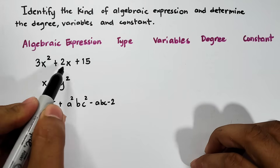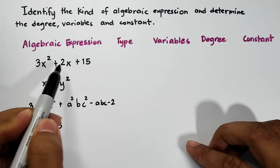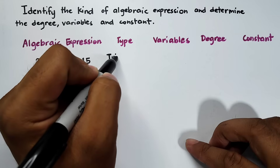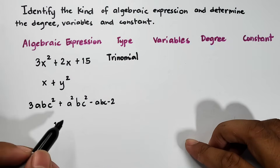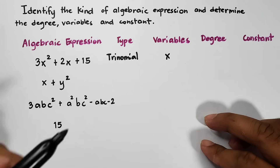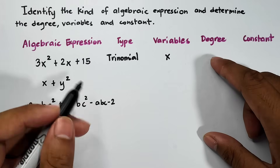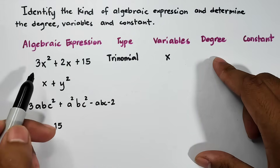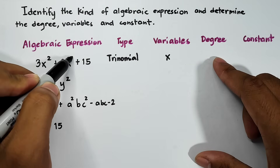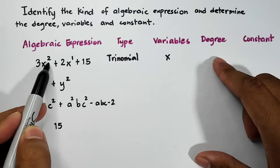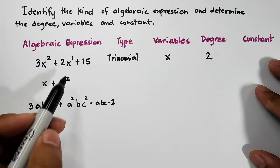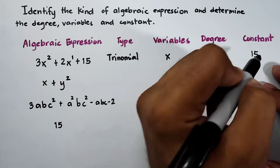In the first example, we have 3x squared plus 2x plus 15. The type: counting terms — 1, 2, and 3 — so this is a trinomial. The variable is x. For the degree, the highest exponent of x is 2 (comparing 2 and 1, the greater is 2), so the degree is 2. The constant is 15.